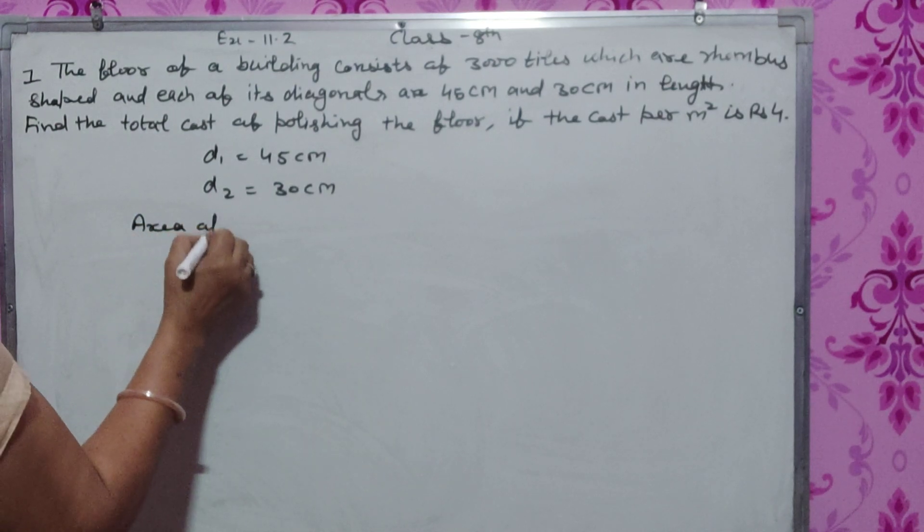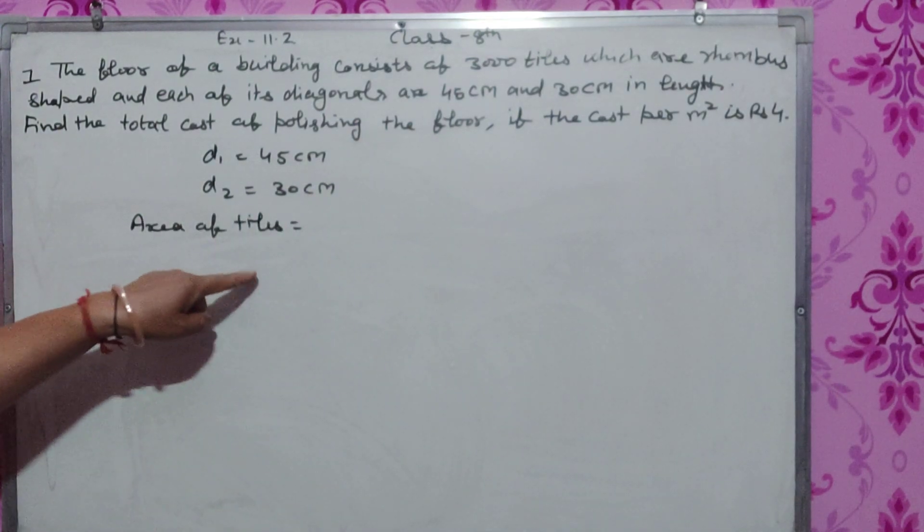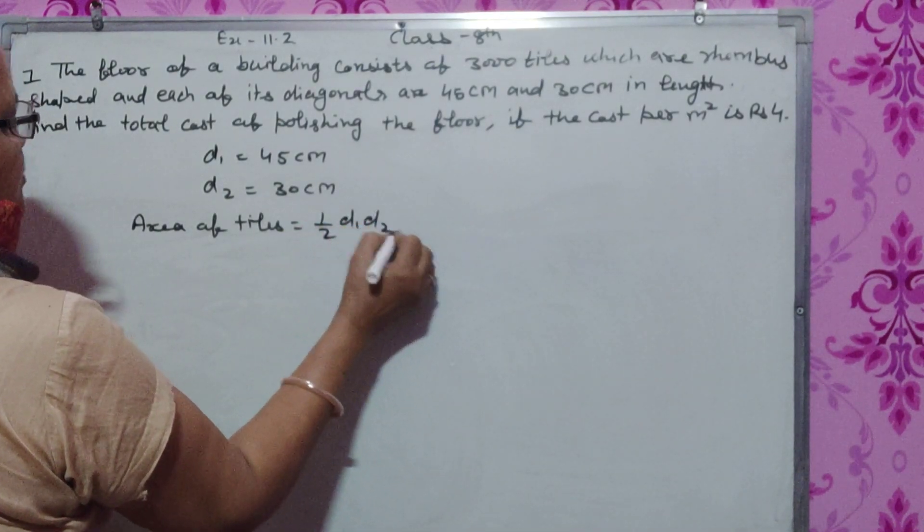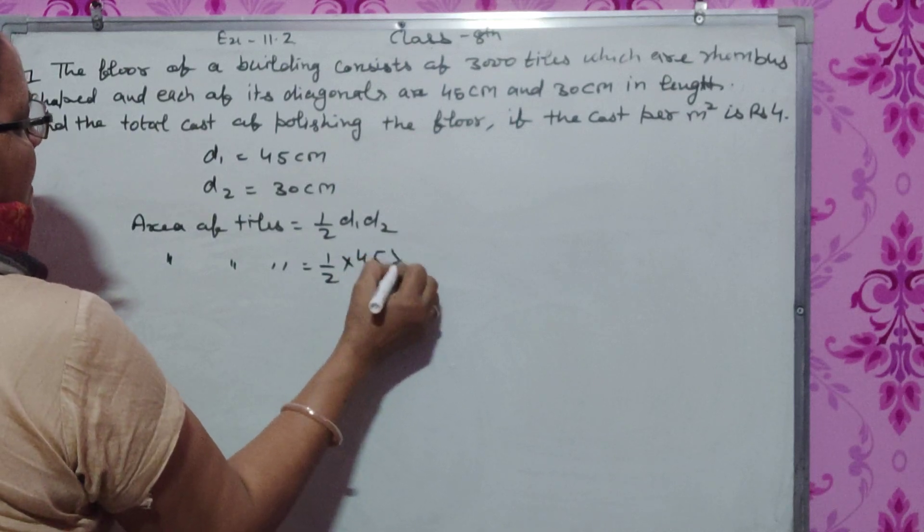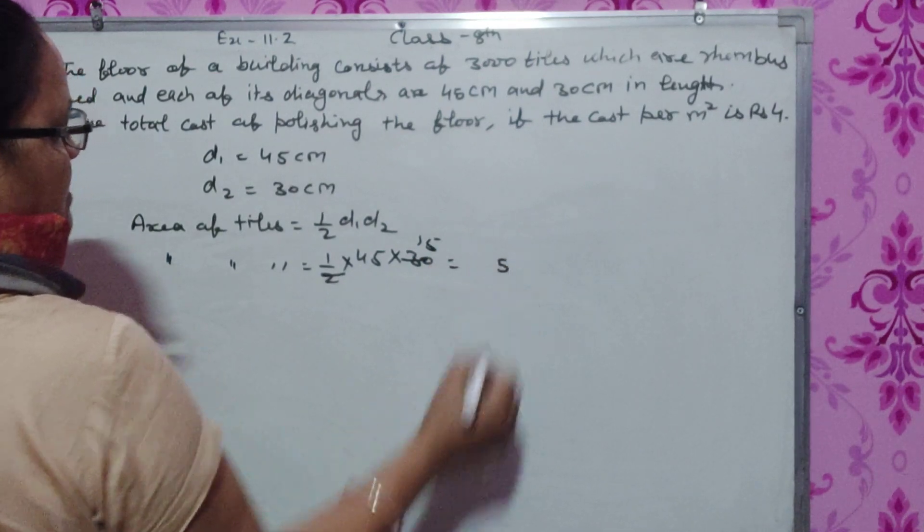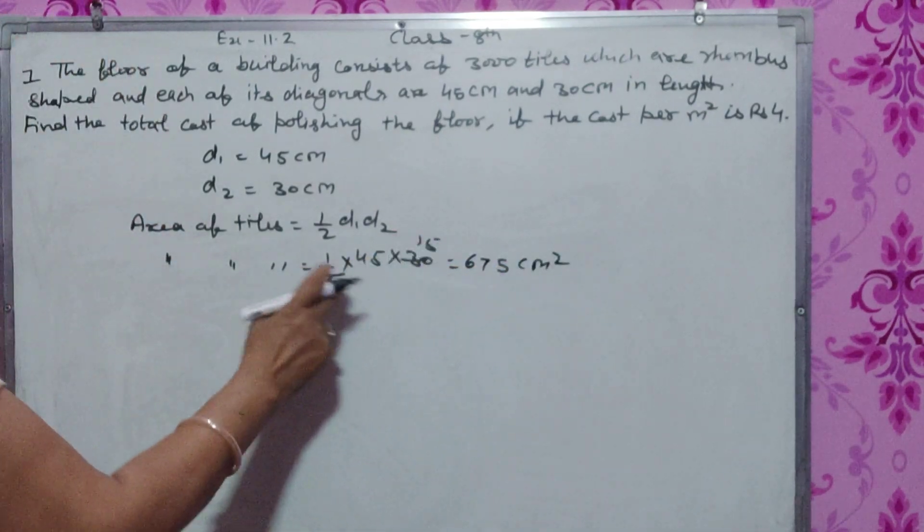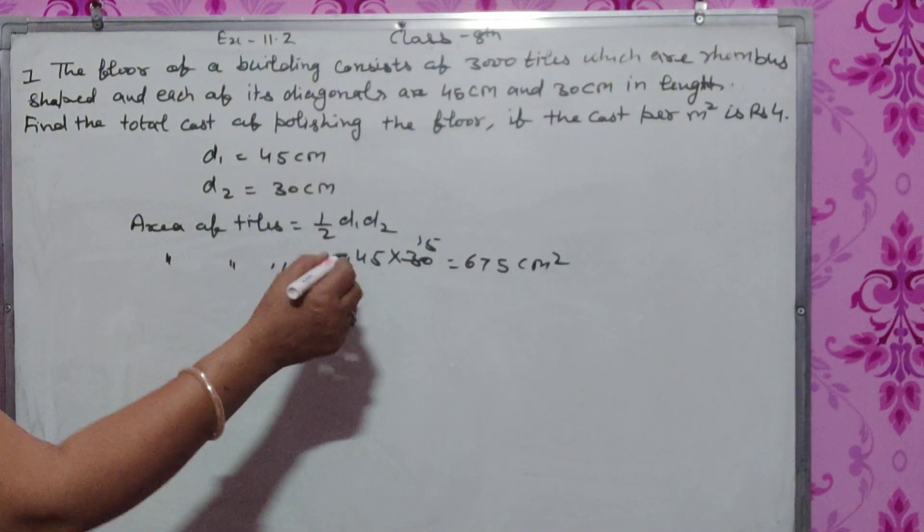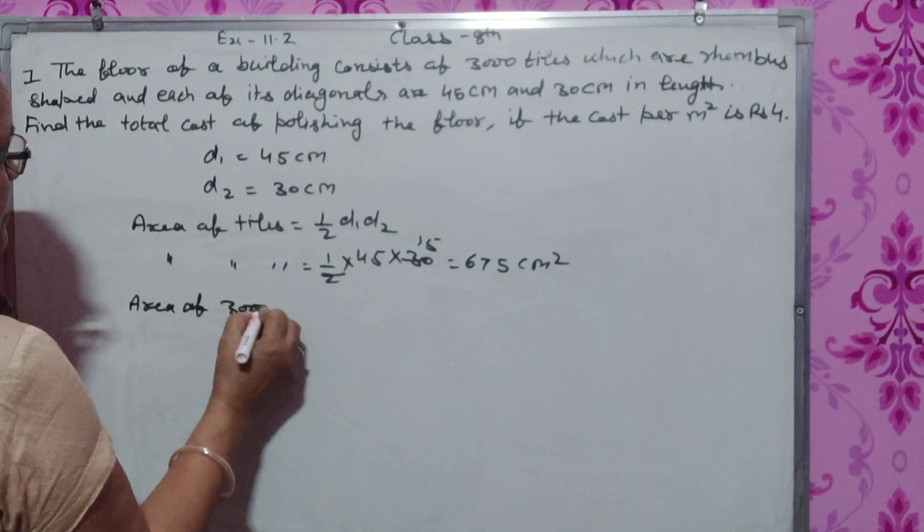Area of tile is 1 by 2, D1 into D2. Area of tile is 1 by 2 into 45 cm into 30 cm, which equals 675 cm square.